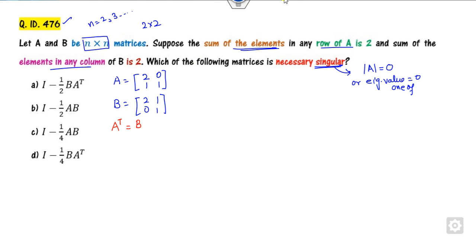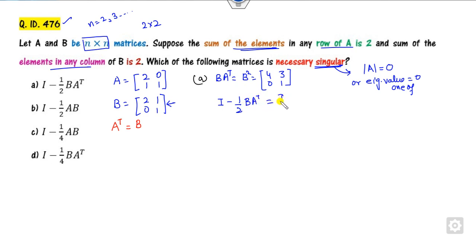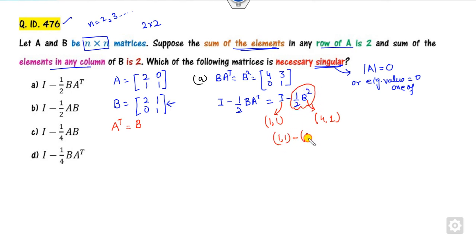Looking at the first option, B·A^T equals B·B = B². Computing B² gives [4,3;1,0]. The eigenvalues of B² are 4 and 1. For (1/2)B·A^T = (1/2)B², eigenvalues of (1/2)I give 1/2, so eigenvalues of this expression are 2 and 1/2. Then eigenvalues are -1 and 1/2 — none is 0, so it is not singular. This option is cancelled.